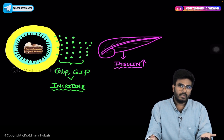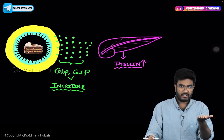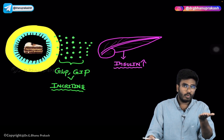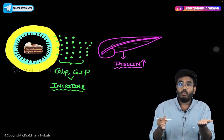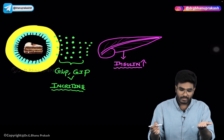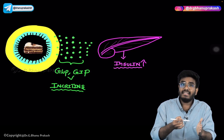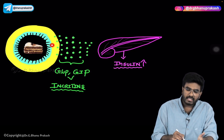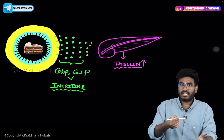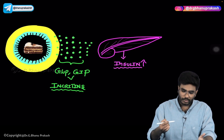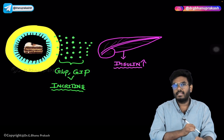That glucose will come into the blood, so your body should be pre-prepared. Whenever there is increased glucose, that glucose needs to be transported into the tissues — for that, insulin is needed. So even before food is digested, or while food is being digested, the GIT wall releases chemicals. These chemicals go to the pancreas and tell it that food is coming, glucose is going to enter the blood, so be prepared — and the pancreas releases insulin.